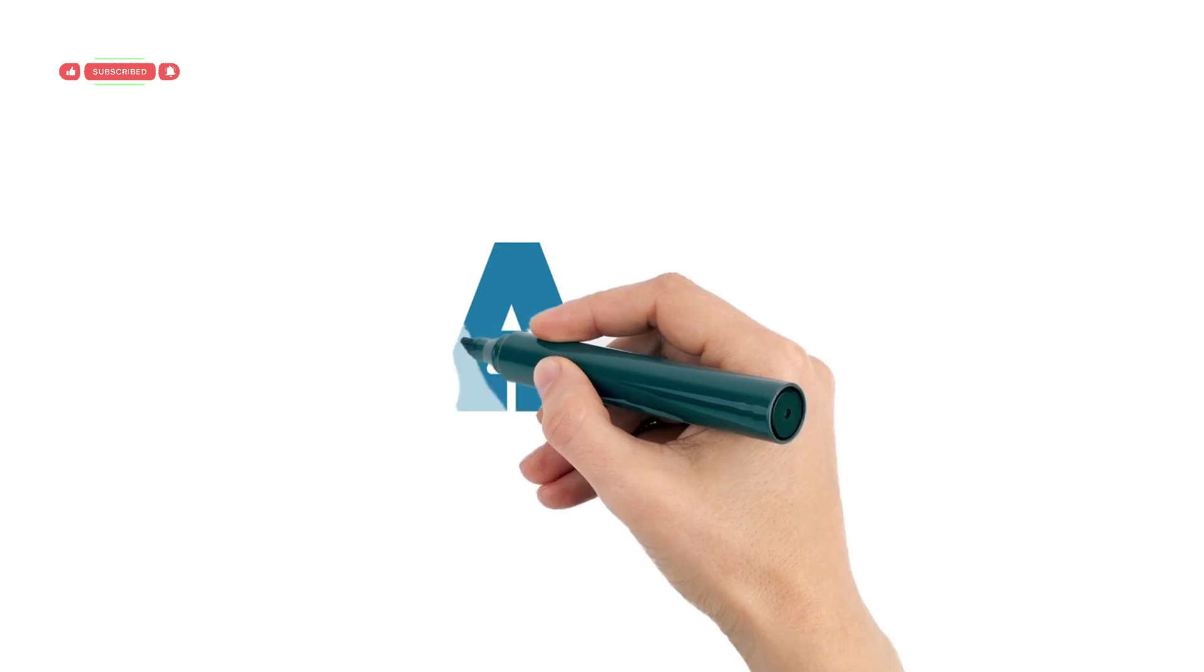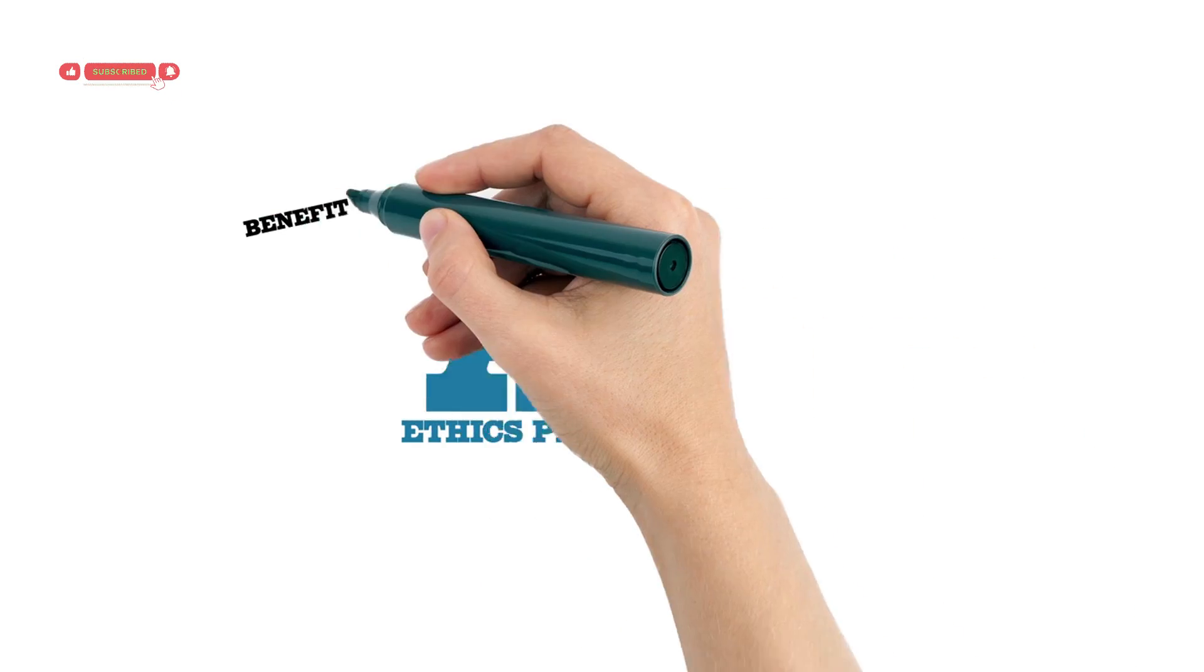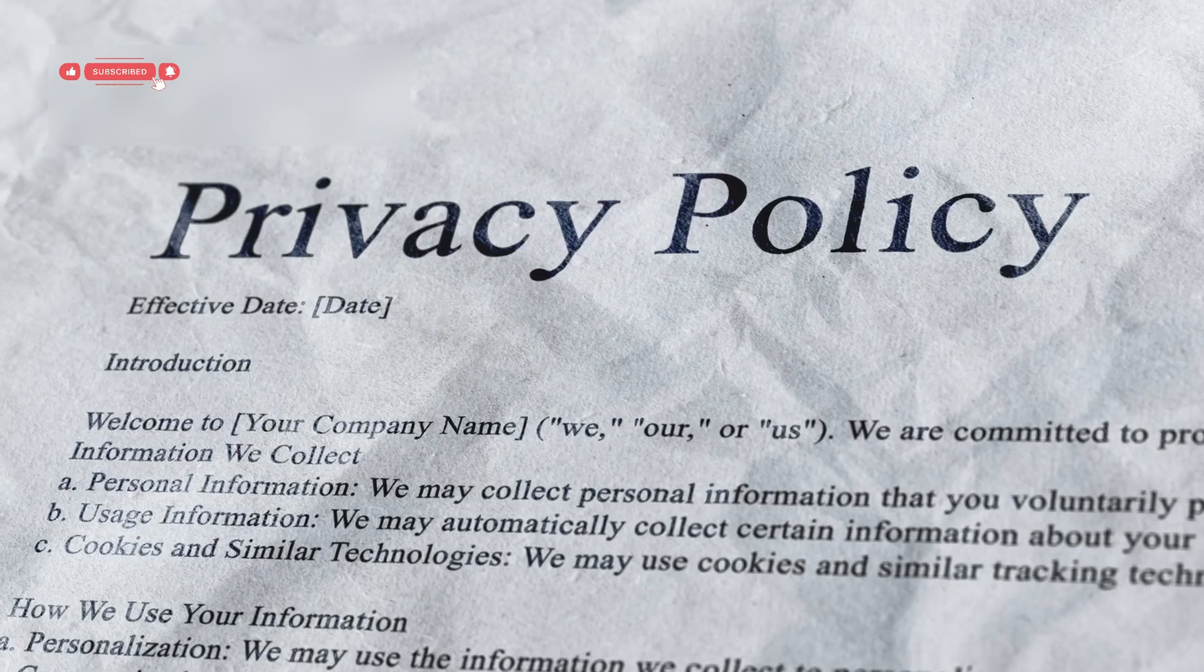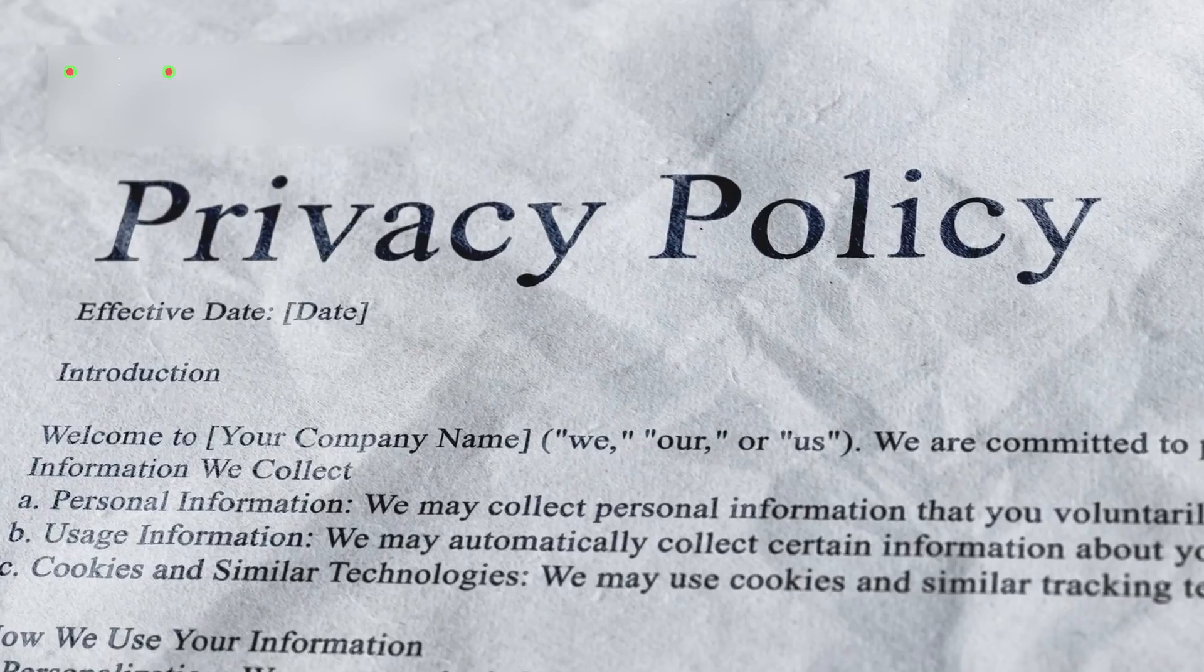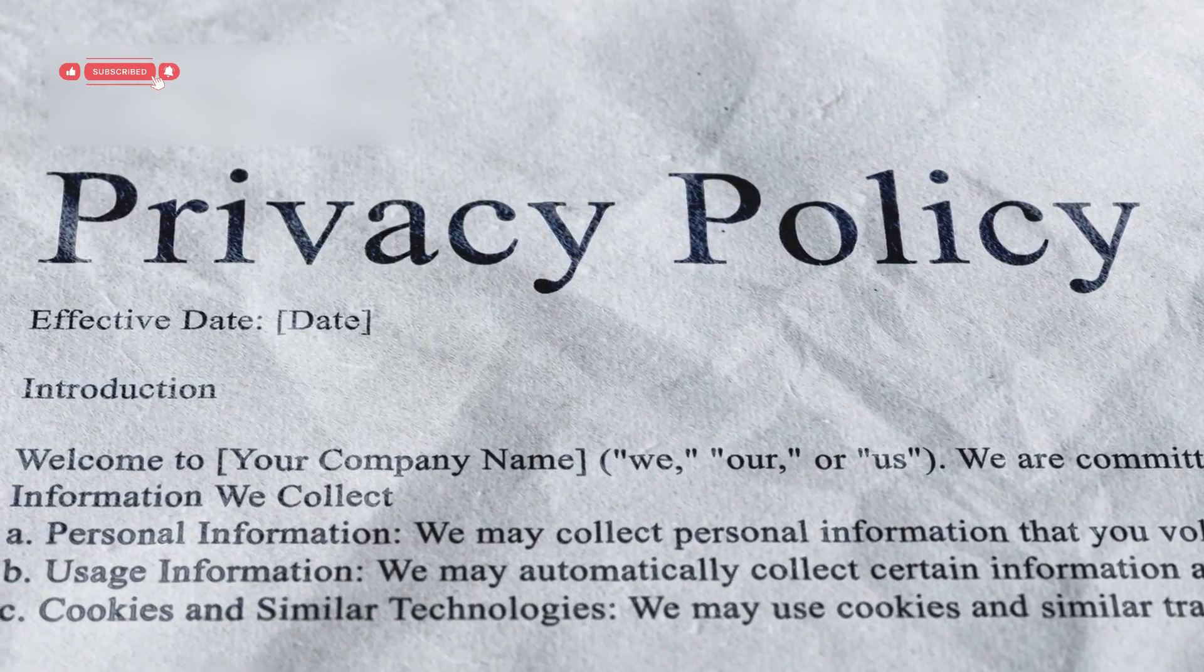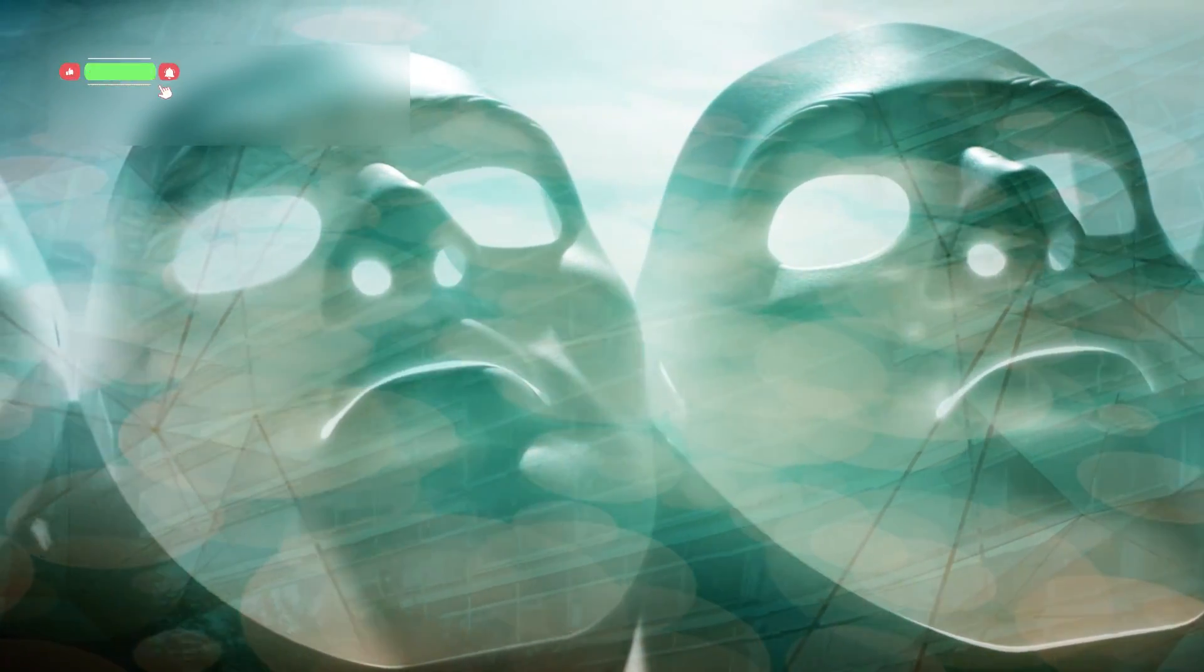Dr. Ellen Harper, a leading AI ethicist, warns that we're creating minds we don't fully understand. She insists there must be clear rules for transparency, data use, and decision authority. Because once these systems can act independently, we need to make sure they're aligned with human values, not just efficiency.